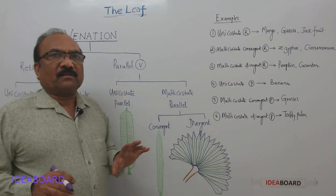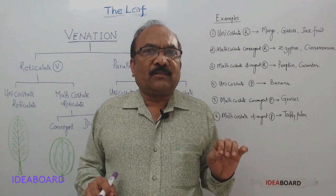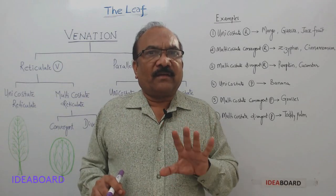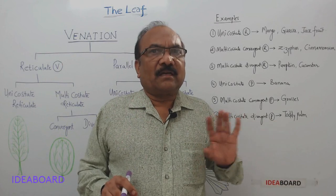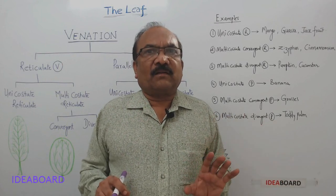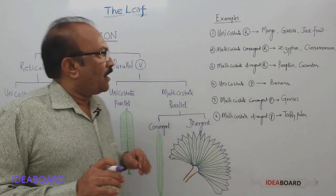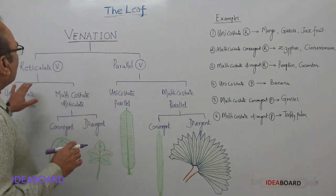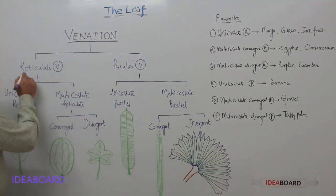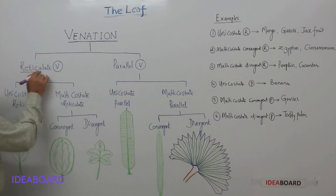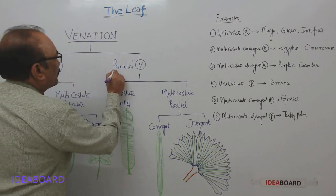That is why we call this mode of arrangement of veins and veinlets in the lamina as venation. So what is venation? The mode of arrangement of veins and veinlets in the lamina is called venation. And venation is basically of two types: one is reticulate venation, and the other one is parallel venation.